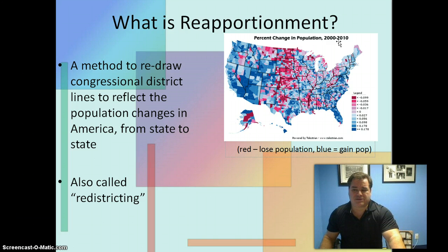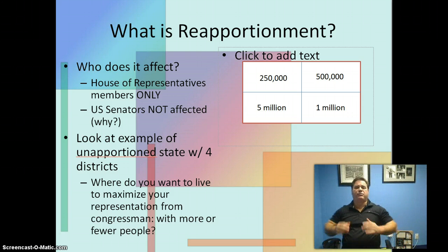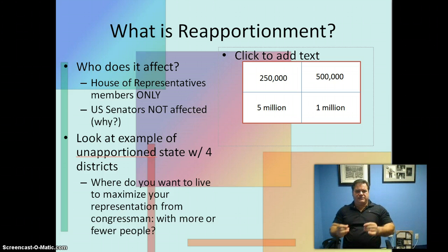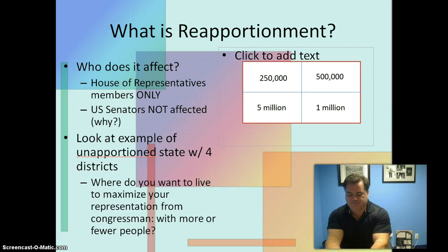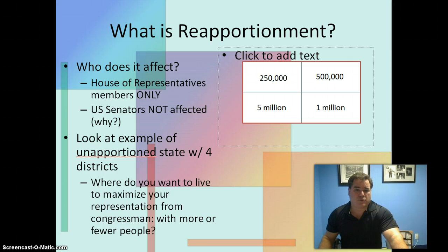Now you might be asking yourself, why is this important? Why do we have to spend time talking about this? It is really important because it's something to equalize representation. Remember when we talked in the first unit about equality of opportunity and the rule of law — equality of representation is a really important idea too. It only affects House of Representatives members; it doesn't affect the Senate.